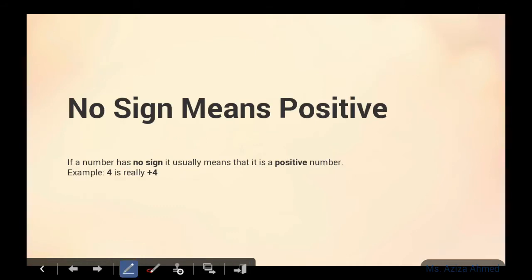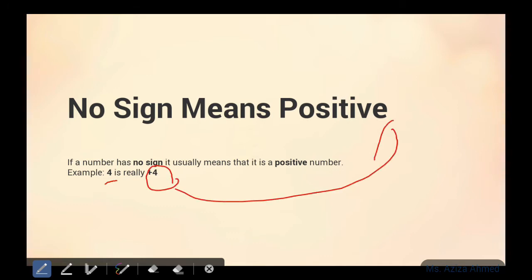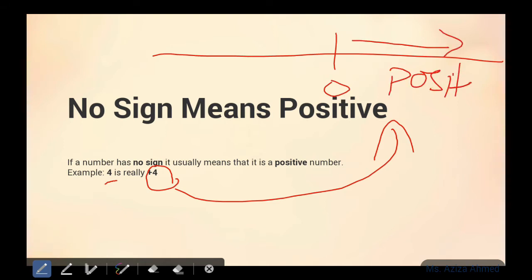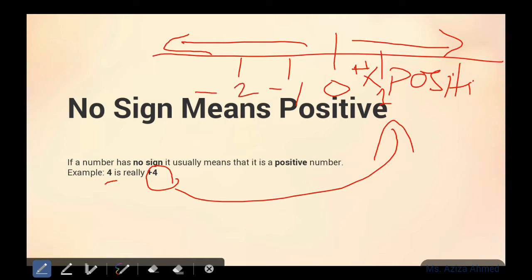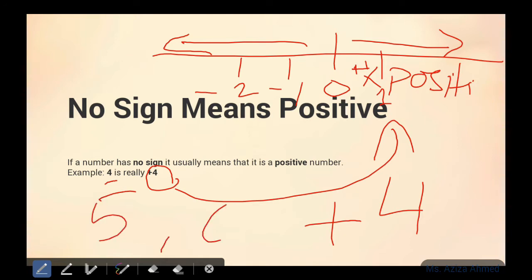No sign means a number is positive. For example, if there is a number 4 and there is no plus sign, it means the number is positive. In previous classes, we saw numbers on the right side of zero are positive — we don't write a plus sign with them, just write 1, 2, and so on. Numbers on the left side of zero are negative numbers, and we add a minus sign with them. But positive numbers, we don't add a plus sign. Agar kisi number ke saath koi sign nahi hai, toh woh positive number hai.